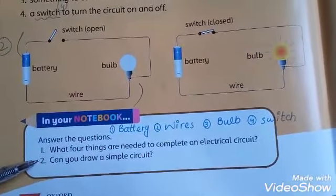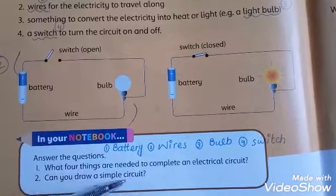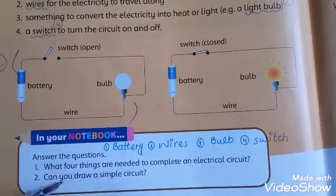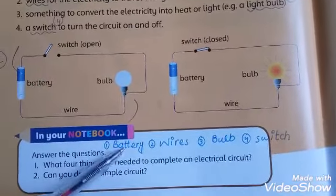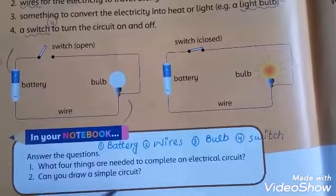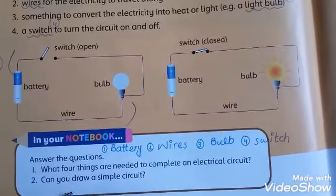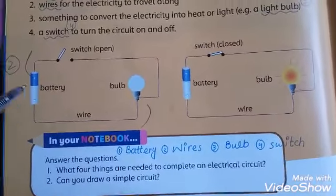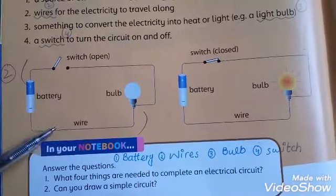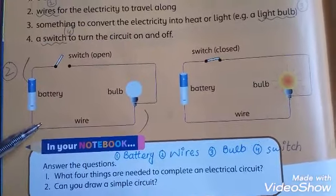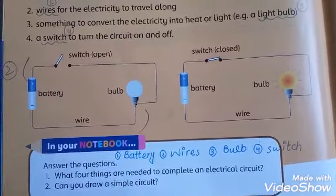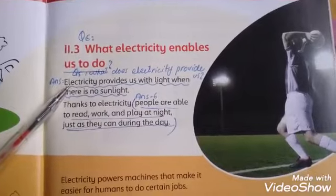Questions: What four things are needed to complete an electrical circuit? — Battery, wires, bulb, and switch. Second question: Can you draw a simple circuit? You have to draw this circuit in your notebooks. This is the answer to the second question.